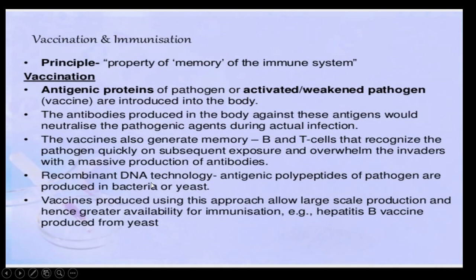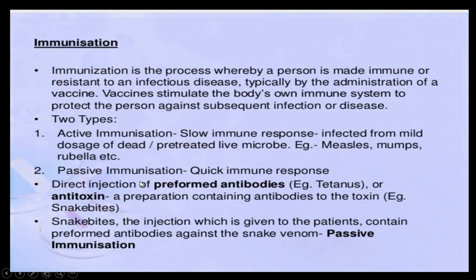These days we have recombinant DNA technology — an advanced branch of biology. In brief, it involves joining the DNA of two or more organisms to get a new manipulated DNA, which is injected into a host so that it expresses genes of another organism. Through recombinant DNA technology, antigenic proteins of pathogens are produced in bacteria or yeast and used for massive immunization programs. Vaccines produced using this technology allow large-scale production and greater availability. An example is the Hepatitis B vaccine, which is produced from yeast through recombinant DNA technology.